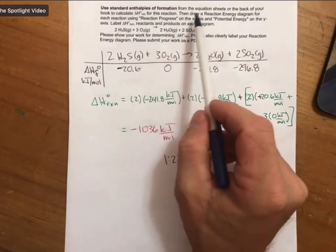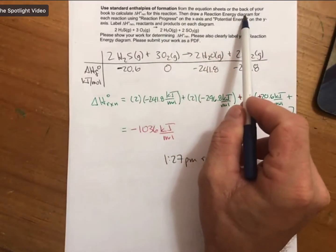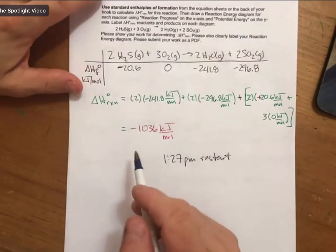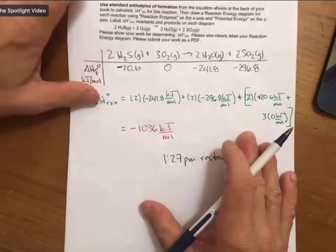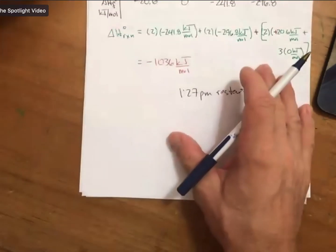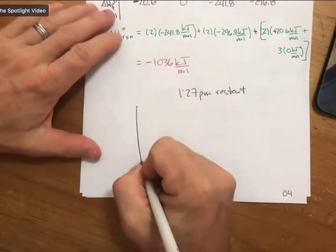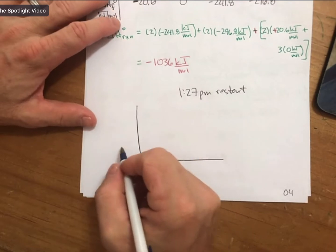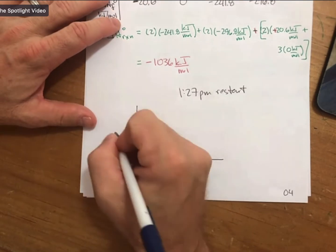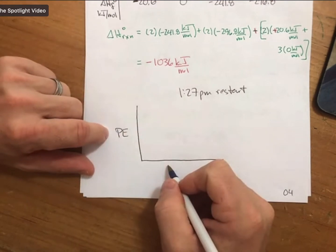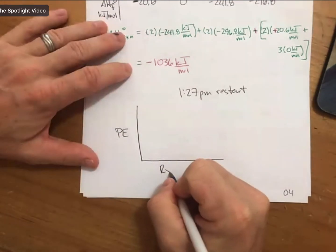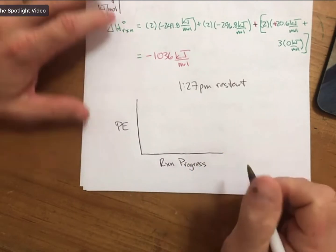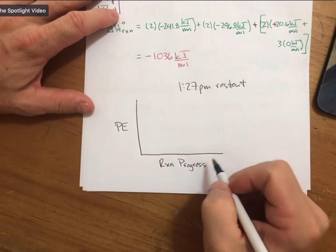I did not finish answering this question. I did not make what's called a reaction energy diagram. A reaction energy diagram for this process will look like this. Just like it says, we will make a graph or diagram with potential energy, which is PE, on the y-axis, and reaction progress on the x-axis.